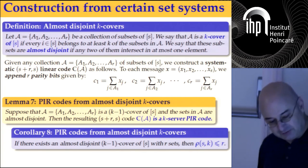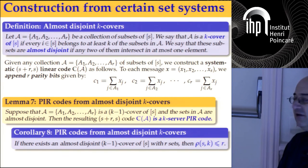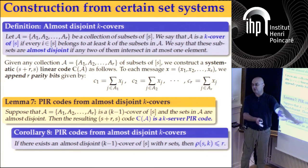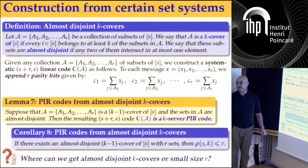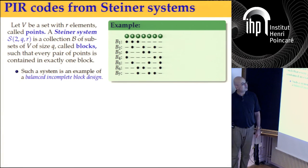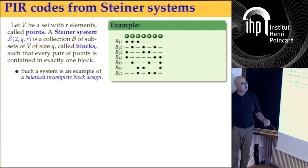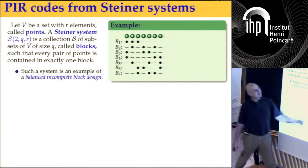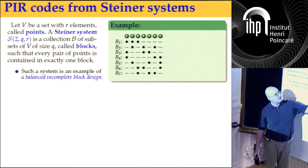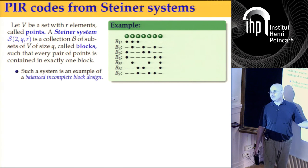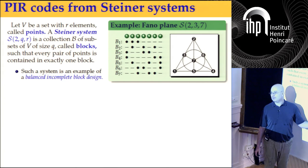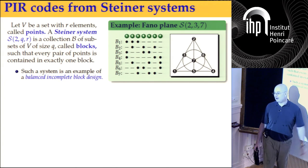If we have such a collection, we can use them as parity checks in the PIR code. It's not difficult to see that if we do that, we get K disjoint recovery sets for each information bit. The first thing that comes to mind is Steiner systems — every pair of points is contained in a unique block. This gives a code structure, but there's a problem.